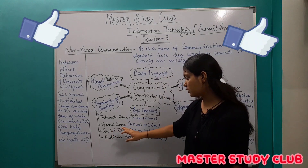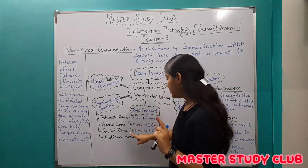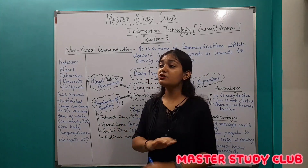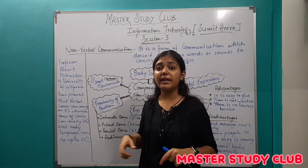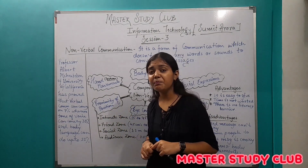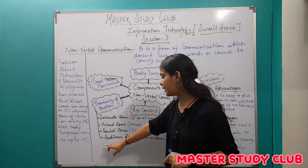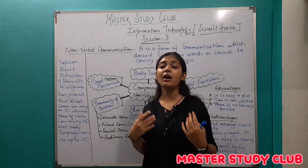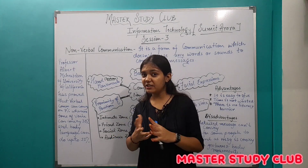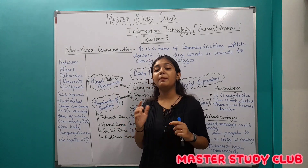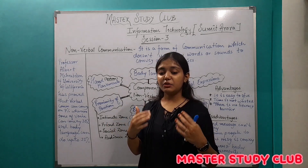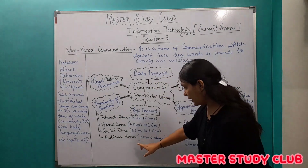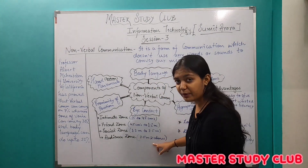The third zone is the social zone — for strangers or old acquaintances you are not very close to. The fourth and final zone is the audience zone. When you are giving a speech on stage and the audience is in front of you, that is the audience zone. This distance is 3.5 meters and above.